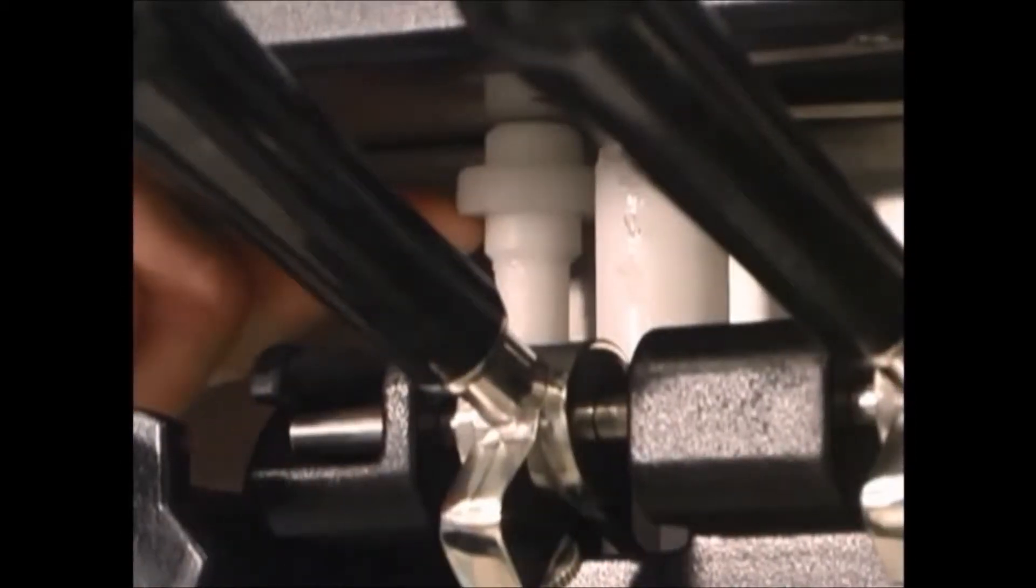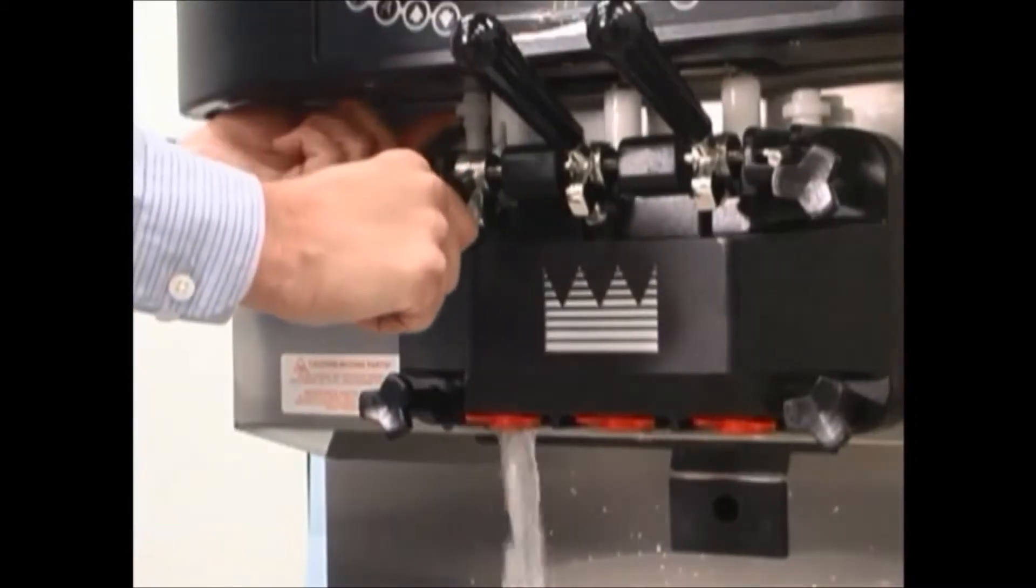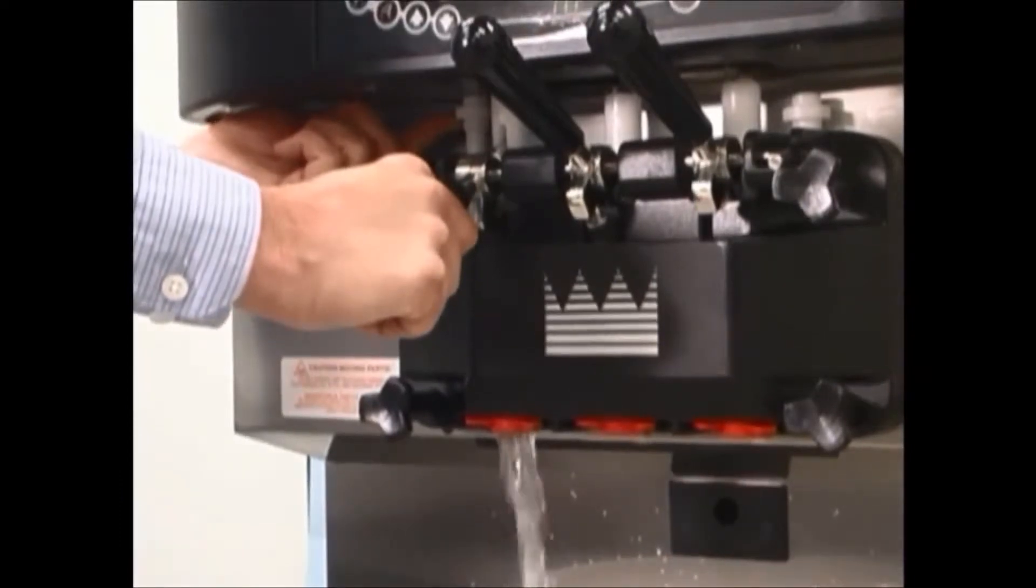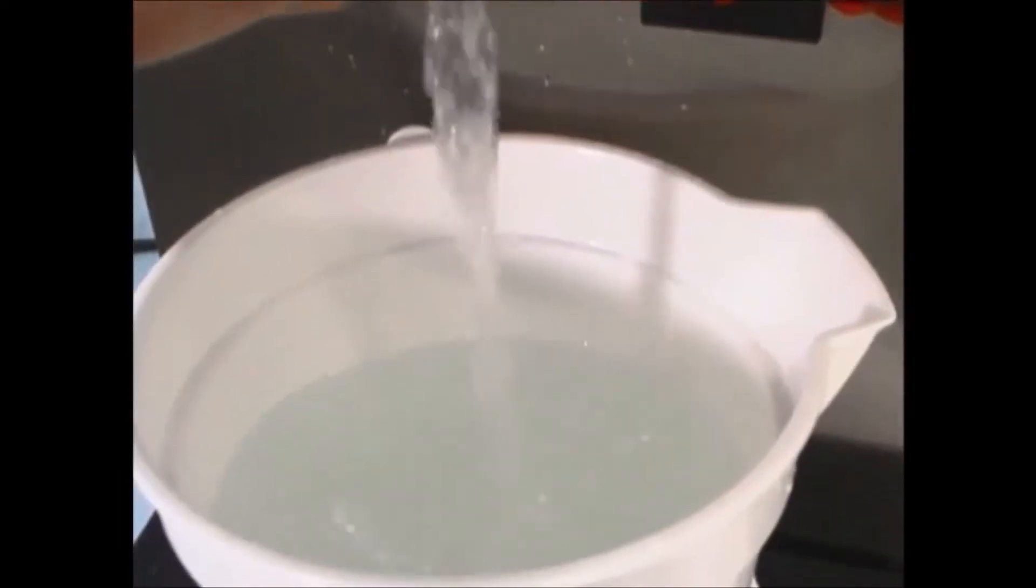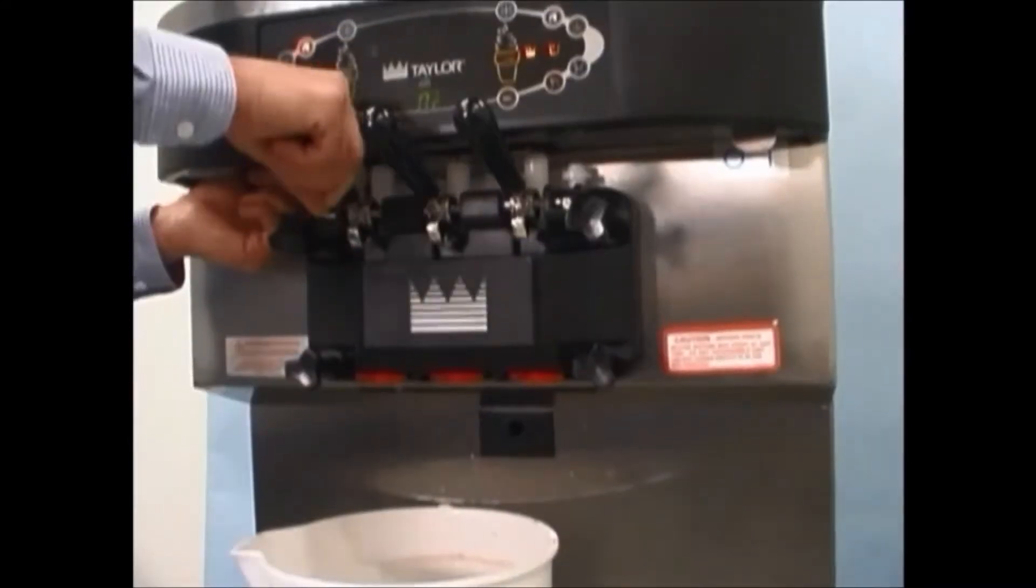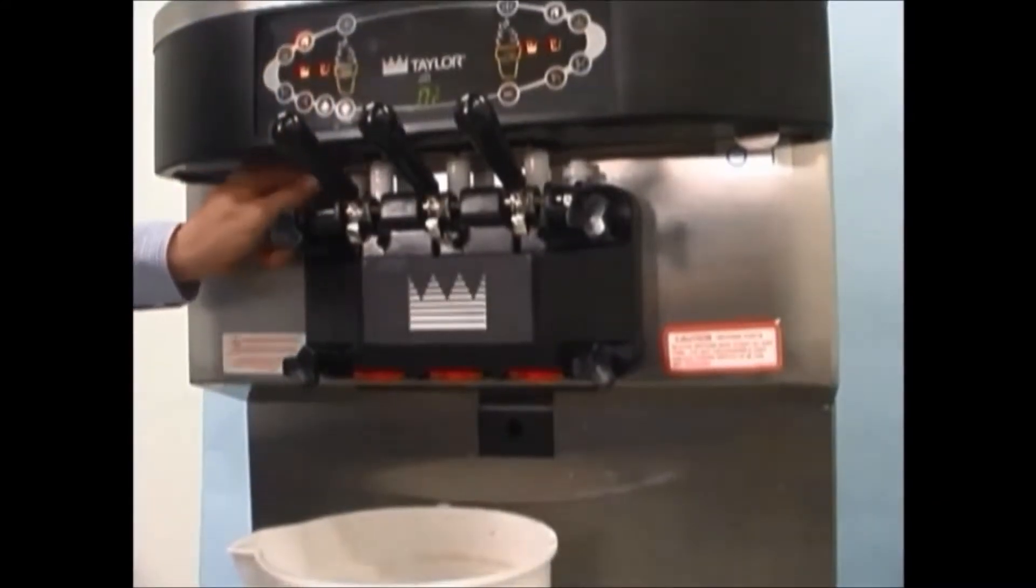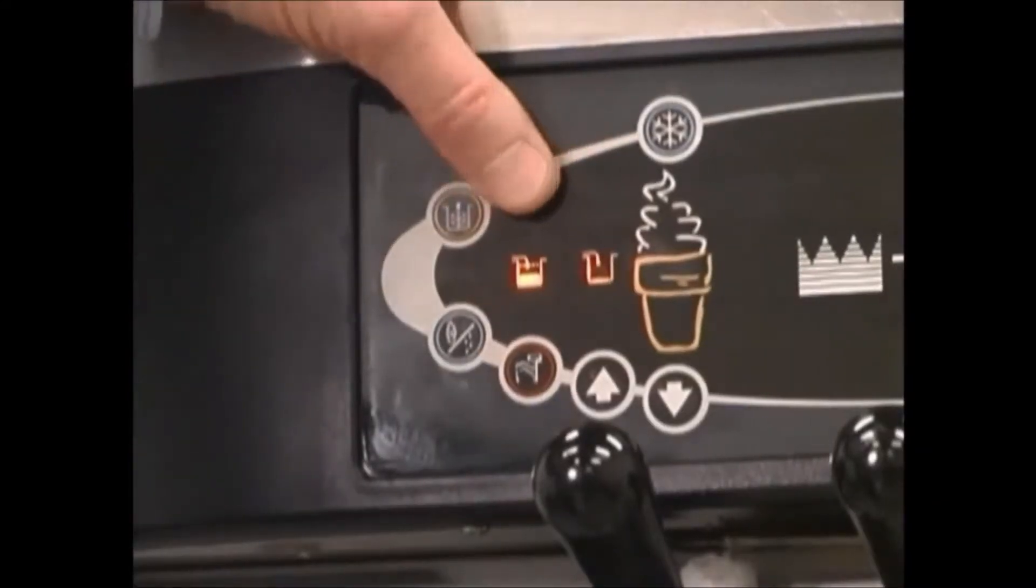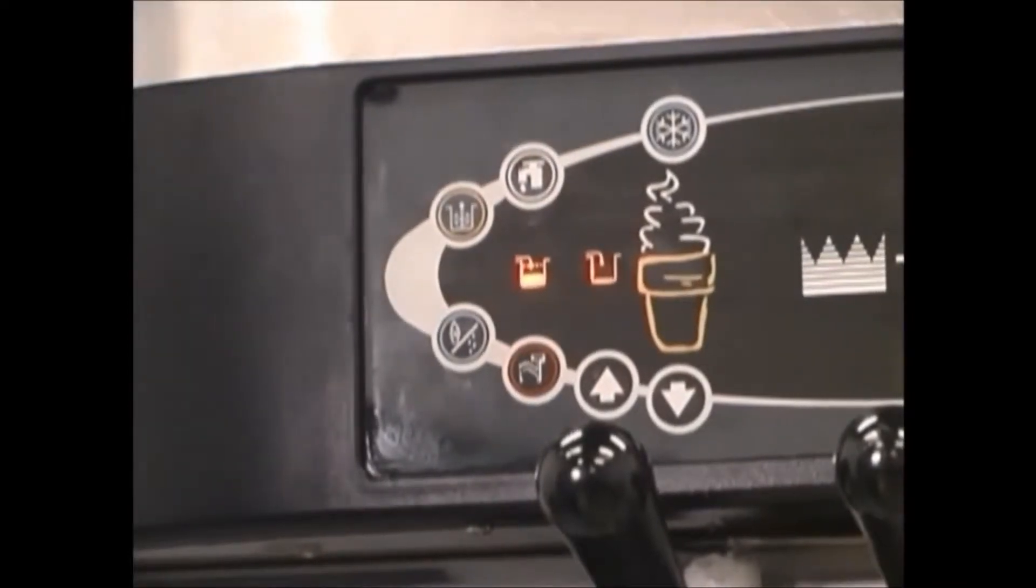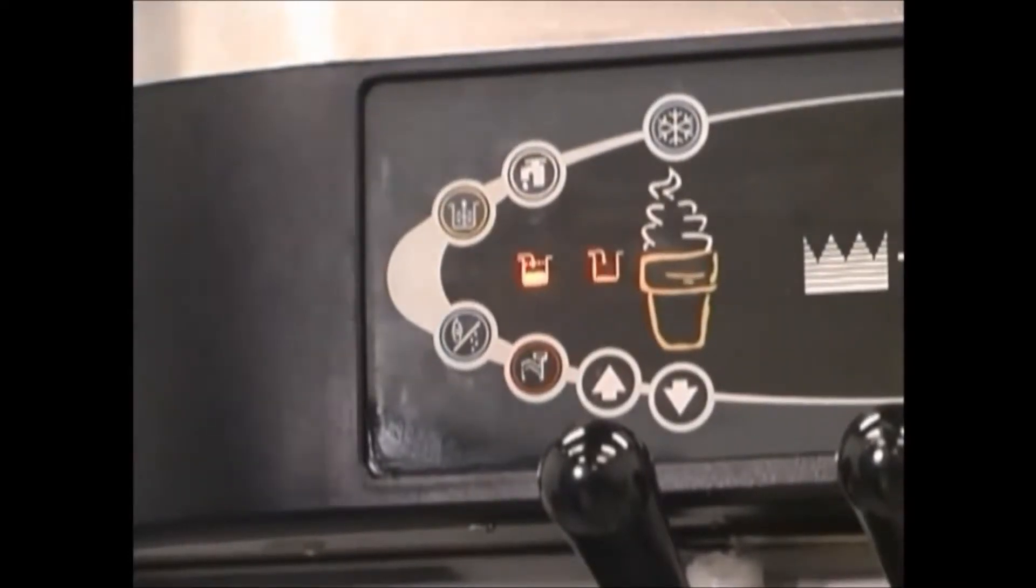Raise the prime plug. Open the draw valve. Draw off all the solution. Once the cleaning solution stops flowing from the door spout, close the draw valve and the prime plug. Press the wash button, cancelling the wash mode. Repeat these steps on the other side of the machine.